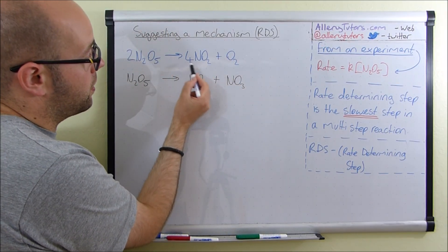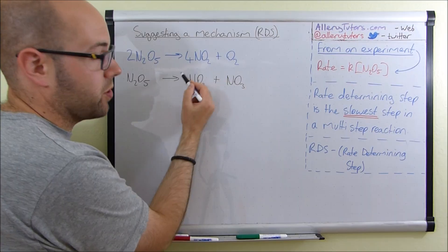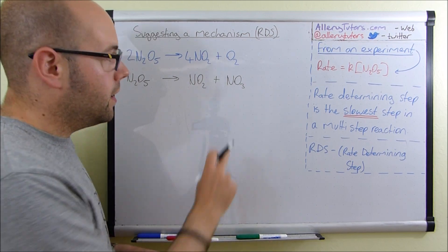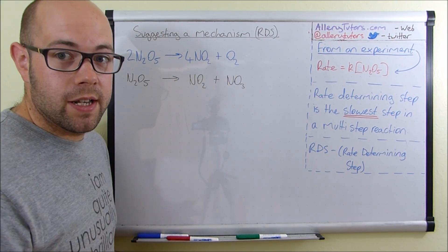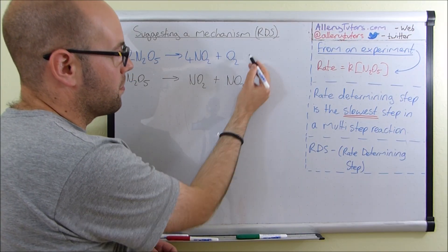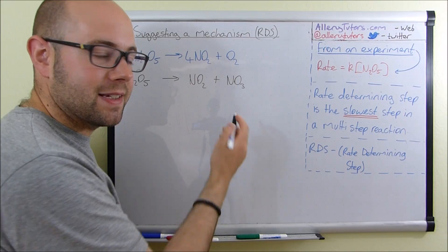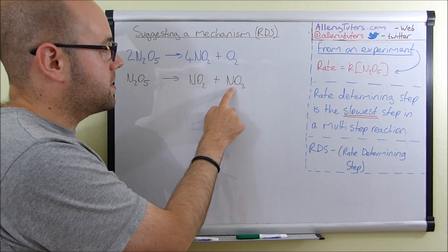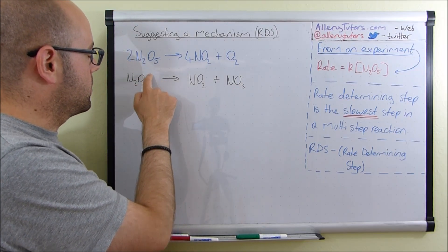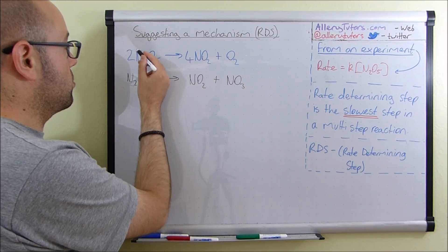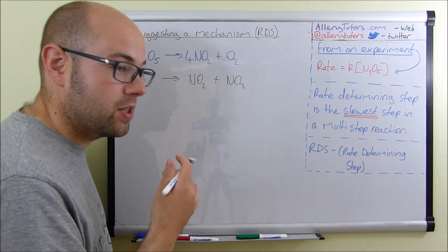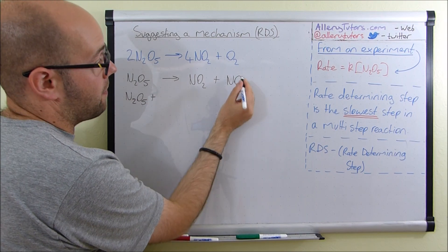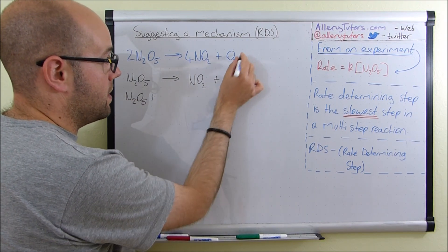It's important that at least one of your products from step one must appear in the final products of the overall equation. You can see we have NO₂ there. NO₃ does not appear in the final products, which means it is classed as an intermediate — it will be used up in the next step. We need another molecule of N₂O₅ to make sure everything adds up to two. So in step two we put N₂O₅, and it has to react with NO₃ since NO₃ doesn't exist in the final product.